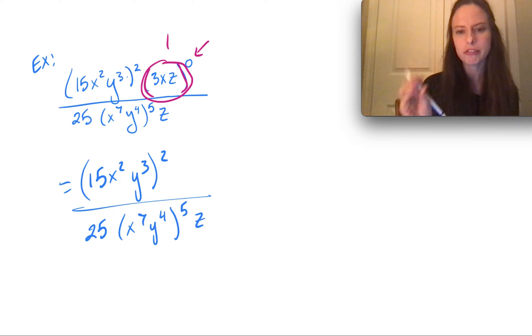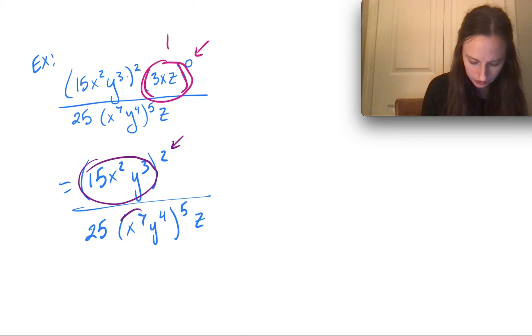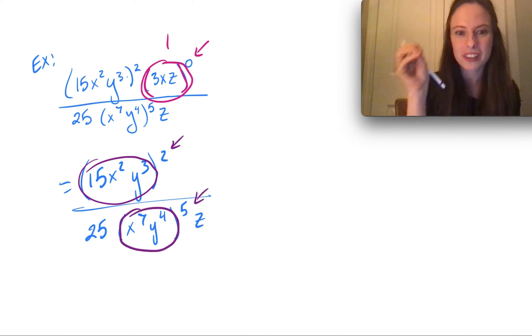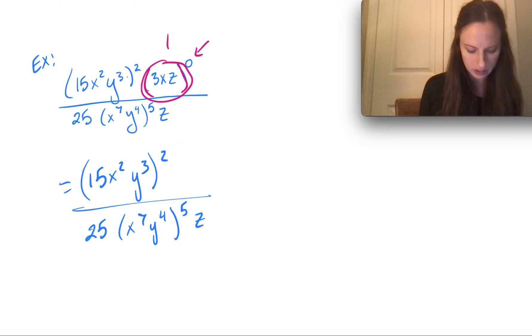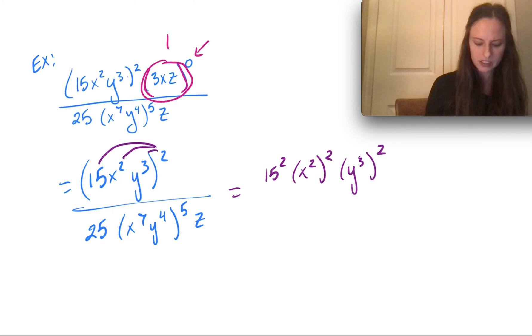So first, I'm going to focus on distributing any exponents that are on the outside of parentheses. So here I have a group of parentheses with a 2 on the outside, and here I have a group of parentheses with a 5 exponent on the outside. So those are the things that I need to distribute first before I can start combining my x's and y's. So I'll start with the top. So let's see, we've got 15 squared times x squared squared, so here let me write this, x squared squared times y to the 3rd squared. So I've distributed to the x squared and to the y cubed there.